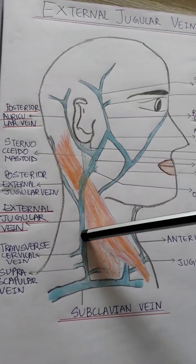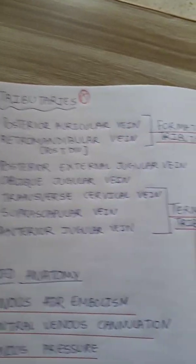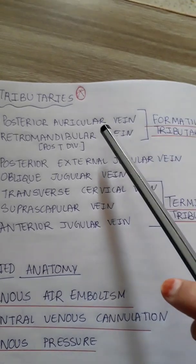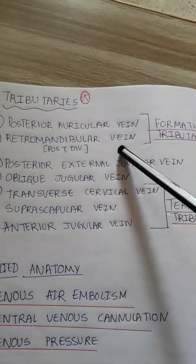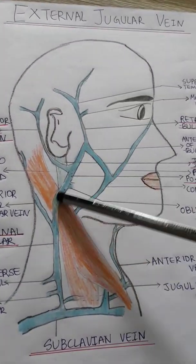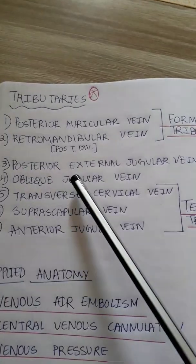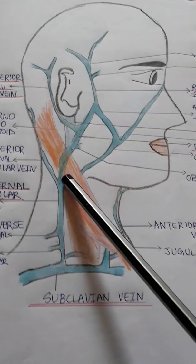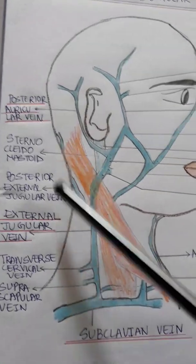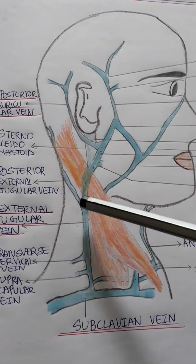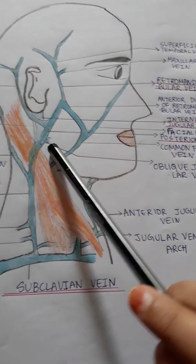The external jugular vein has sets of tributaries which are very important. The formative tributaries are the posterior auricular vein and the posterior division of the retromandibular vein. It also receives the posterior external jugular vein — which runs posteriorly — and the oblique jugular vein.